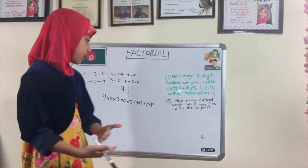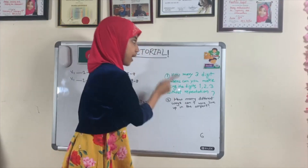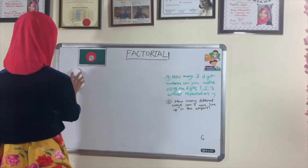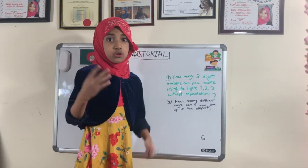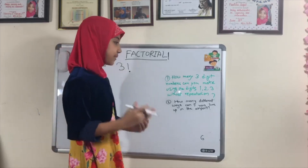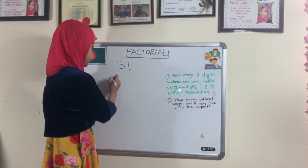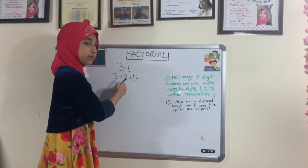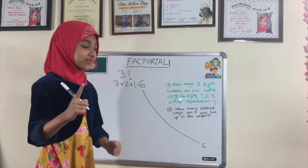Since our first question's answer was six, I'm going to prove it using the factorial method. Remember, there were three digits — 1, 2, and 3 — so we use 3 factorial. That's 3 × 2 × 1. Three times two is six, and six times one is six. Look at that — I proved the answer was six!